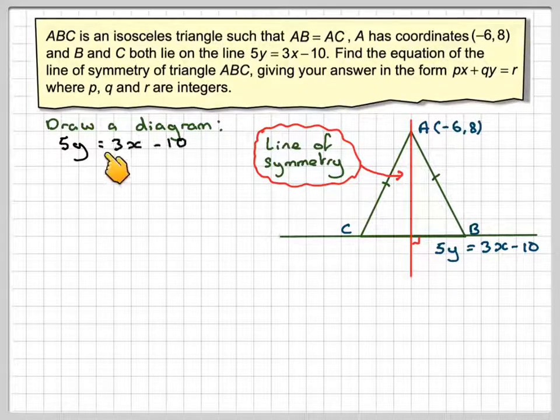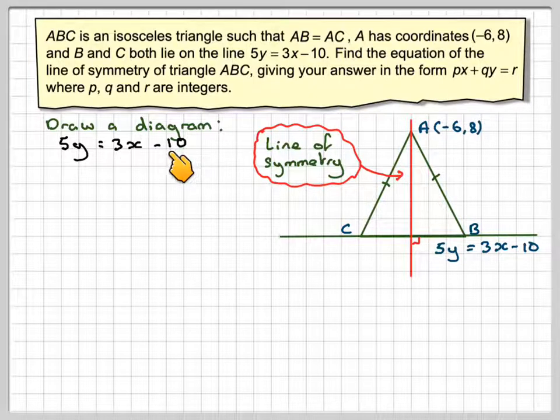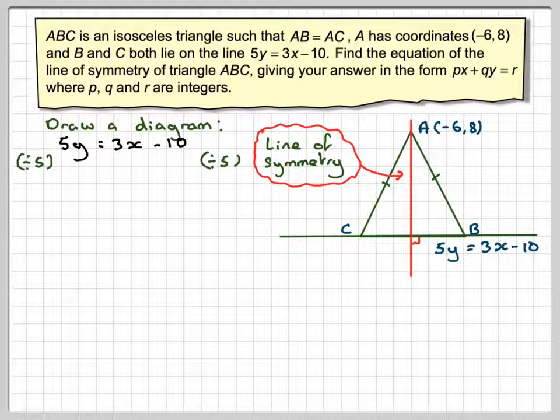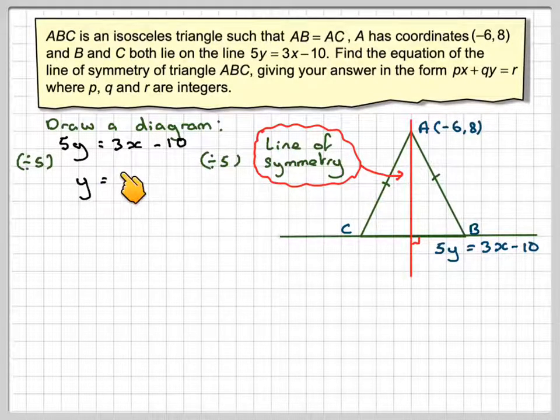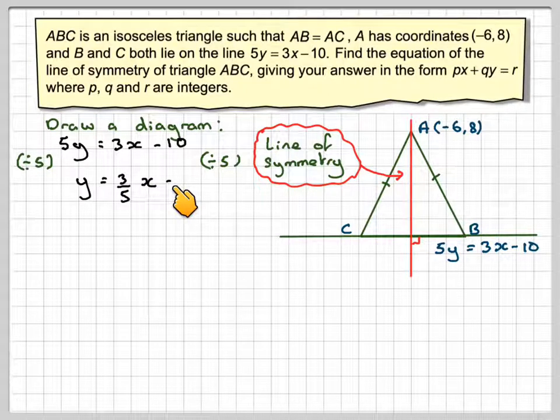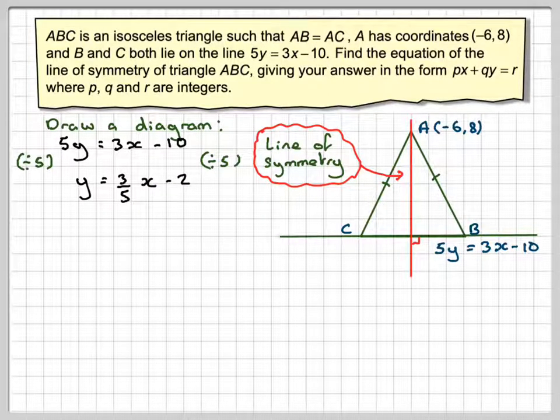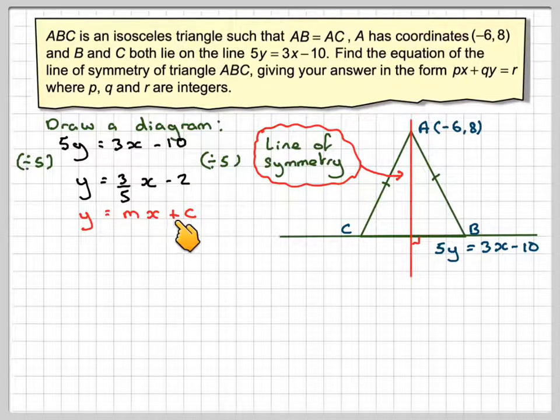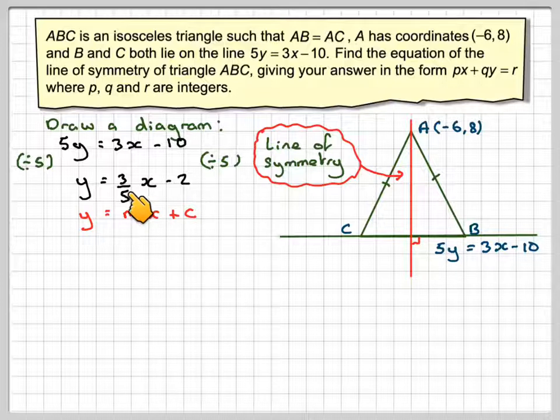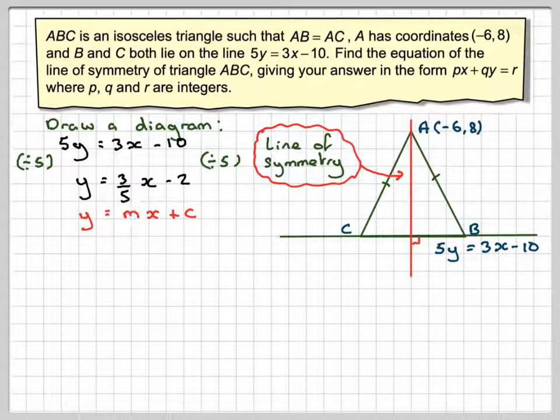So, writing down 5Y = 3X - 10. In order to find the gradient of this line, you need to put it in the form Y = MX + C. Dividing both sides by 5 gives Y = (3/5)X - 10/5, which is -2. Then if we use Y = MX + C, we'll see that M is 3/5.